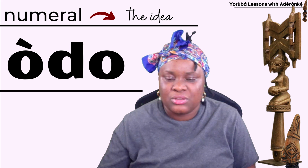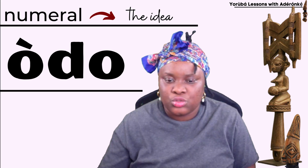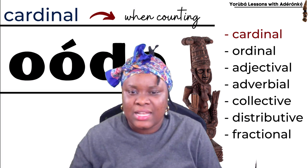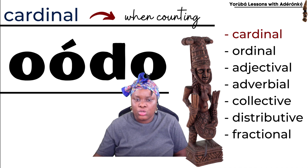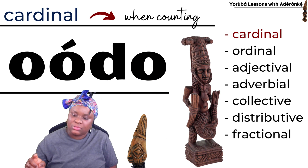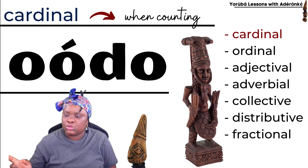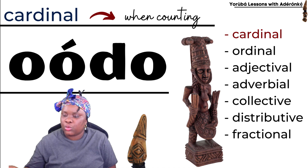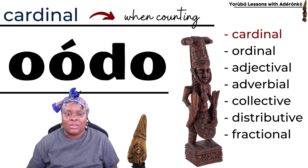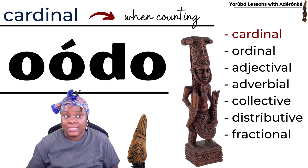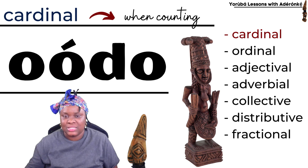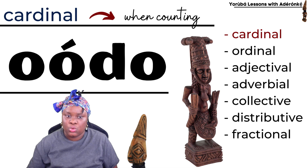However, when you're using Odo to count, in the cardinal form you would say "Odo." So let's say you're counting zero, one, two, three, four — you would say "Odo" rather than "Odo." Odo is the idea, it's the numeral, yes, but there's a way that you express it in counting, which is "Odo." Just keep that in mind.